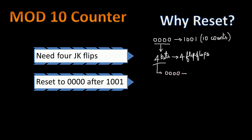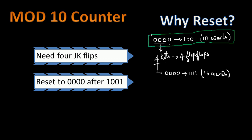Usually after 1001 the count would go to 1010, but instead we have to make sure it goes back to 0000. For a usual 4-bit counter the number of possible combinations is 16, from 0000 to 1111 — a total of 16 counts. But for our case we just need the counter to go from 0000 up to 1001, and after that reset back to 0000. From 1010 to 1111 there are a total of 6 counts which are not desirable.